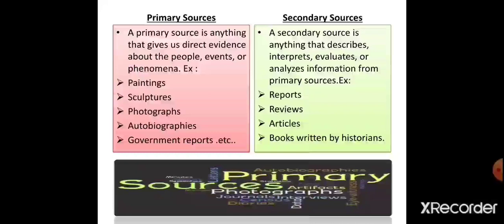A secondary source is anything that describes, interprets, evaluates or analyses information from primary sources. For example, a coin can be a primary source which tells us about the king, the place, the century, the material, the economic status of the king or the people of that time period. But any book or article written on that particular coin will be the secondary source — anything dependent on the primary source is known as a secondary source.